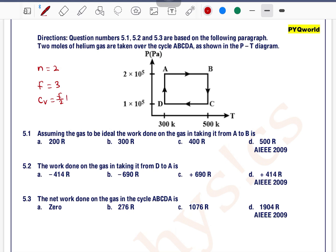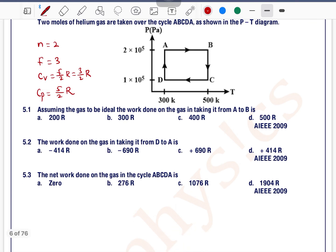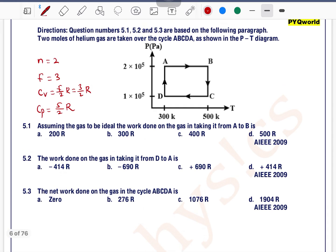monoatomic gas having degree of freedom 3. First, we will find the value of CV. CV equals F/2·R, so this is equal to 3/2·R. We can find CP: CP equals CV plus R, which means 5/2·R. So we have all the values here. Now, in question number